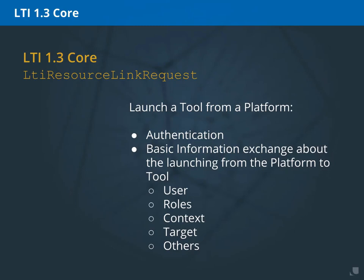To initiate the launch, LTI 1.3 core includes a basic message called the LTI resource link request. It is used to launch a tool resource from a platform. The workflow to make this happen involves some steps: authentication, to be sure that everyone involved is really who they say they are, and then sending the request content — the user, the roles, and the resource link — so the tool can authorize the final display of the resource. Let's see that in a diagram.